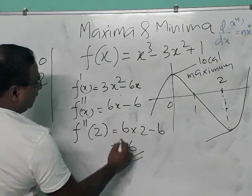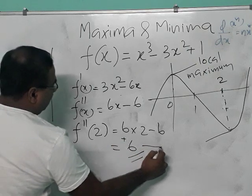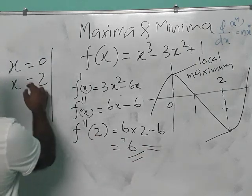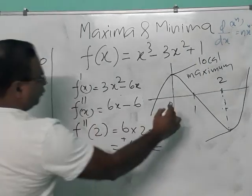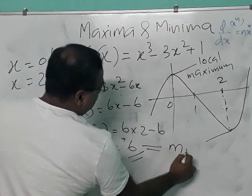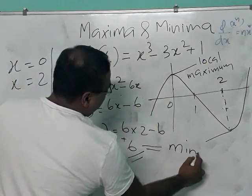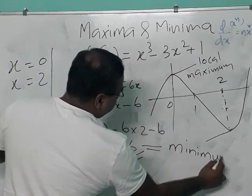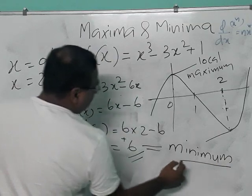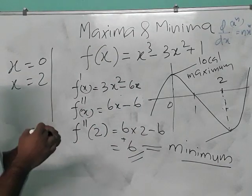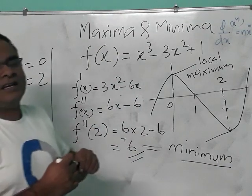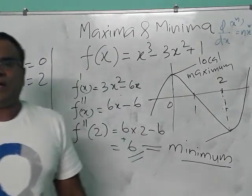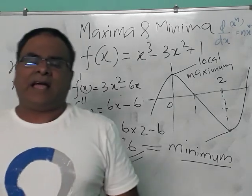Then we calculate f''(2): that is 6(2) - 6 = 12 - 6 = 6. It is a positive value, which means that point x = 2 is a local minimum. This is the concept of maxima and minima of a function in calculus.